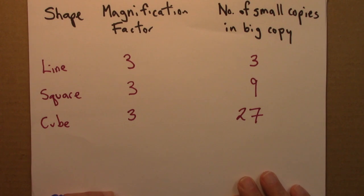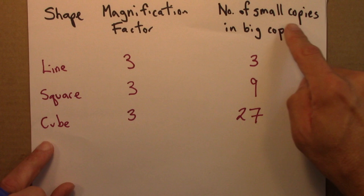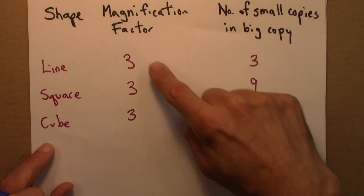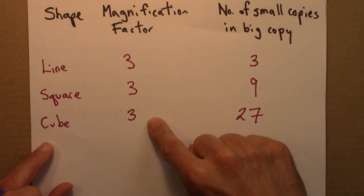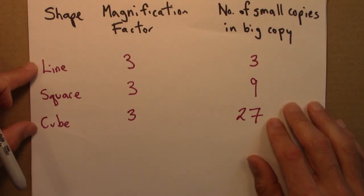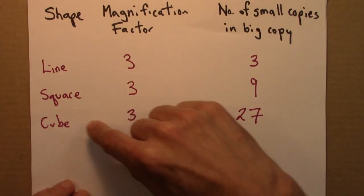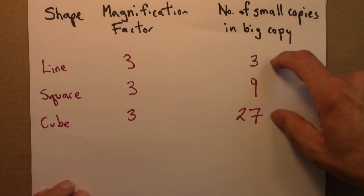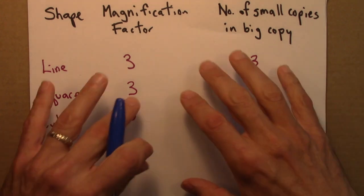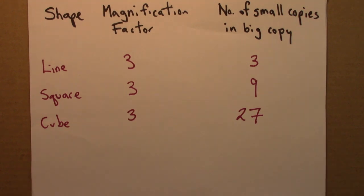So let's see what we can learn from this table. The question is, what geometric property or feature of these shapes determines what goes over here? Determines how many small copies go in the big copy? Because the magnification factor for all of these is the same. So the answer to this question is that it's the dimension. Lines, squares, and cubes have a different dimension. And so the numbers that appear over here are different. So let me write down the relationship between this and this using the dimension.